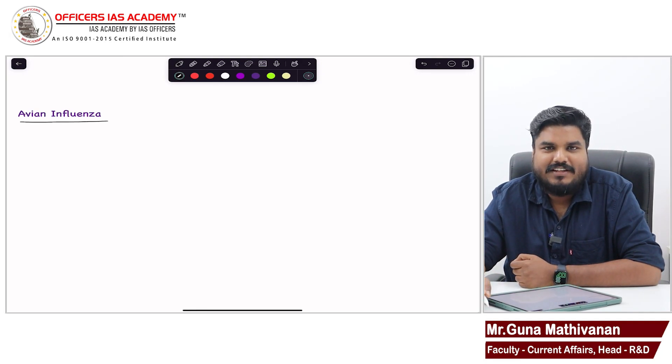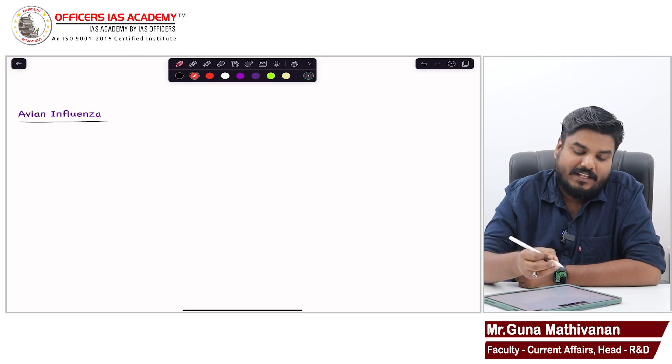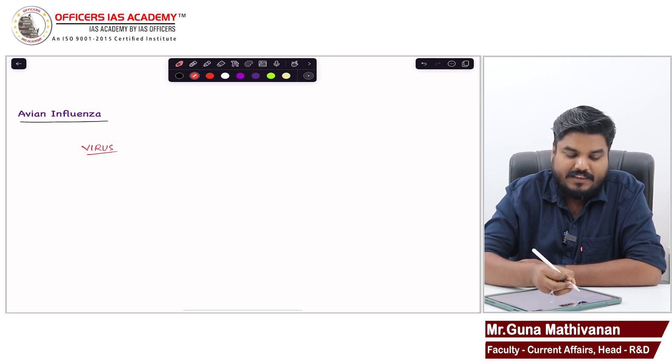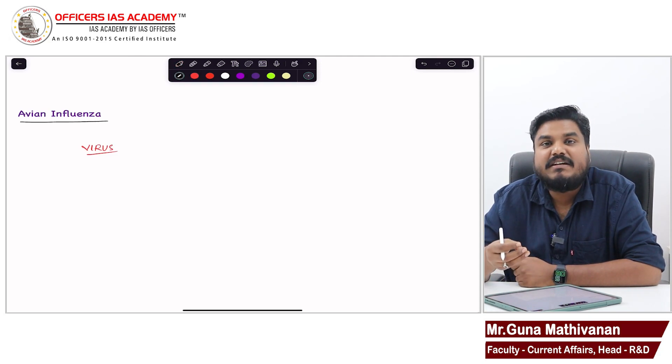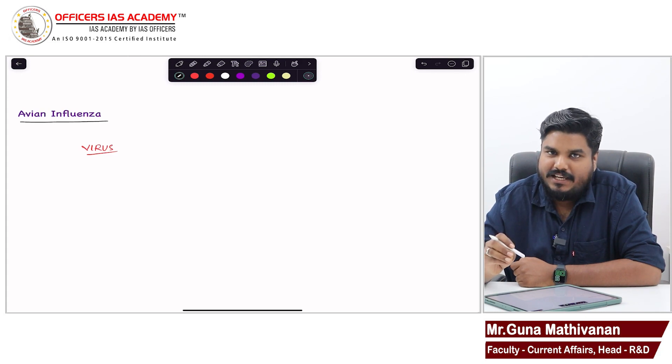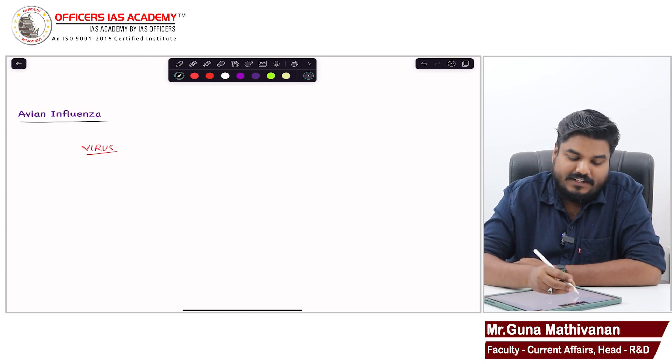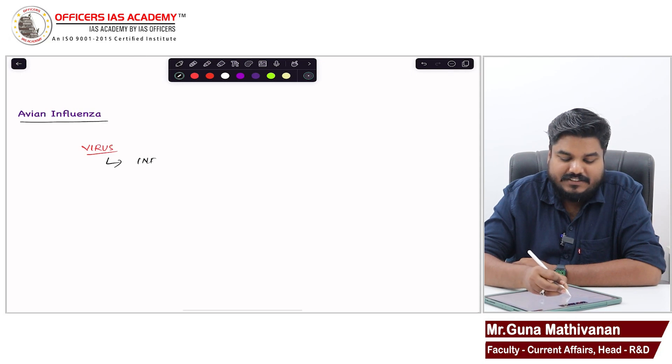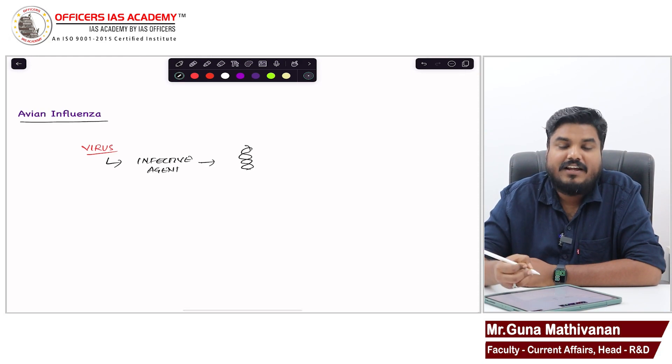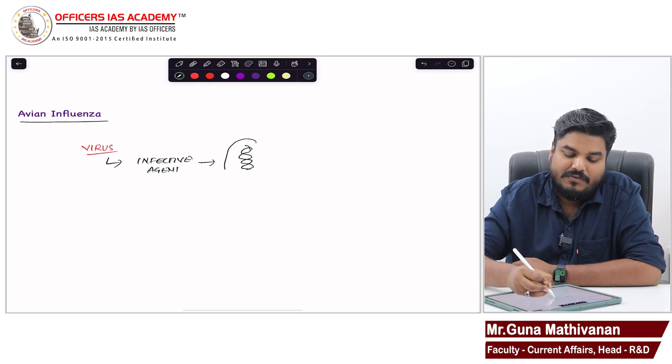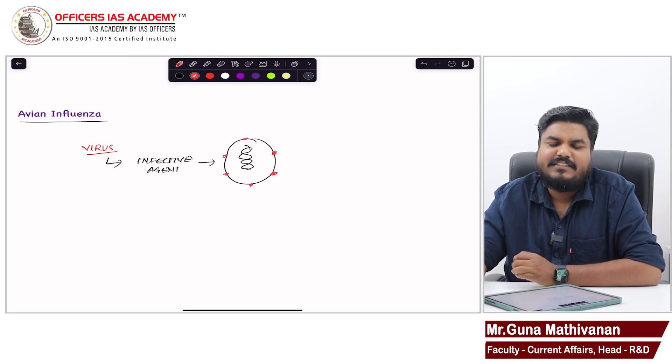Friends, before understanding avian influenza, let me explain about virus. A virus is an infective agent which contains genetic material - it can be DNA or RNA - and this is surrounded by a protein layer. This is virus.